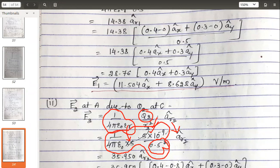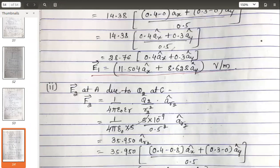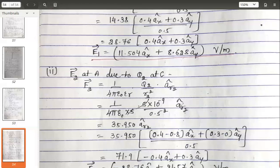Use the calculator. Take the numerator: 5 nano, 10 to the minus 9, divided by 4πε₀ into 5 into 0.5 squared. Use the calculator, you will get 35.950. Please verify it. If anything is wrong, please put it in the chat. ar2.